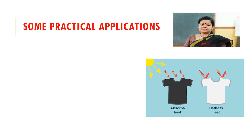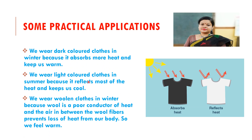Taking this knowledge: we wear dark colored clothes in winter because they absorb more heat and keep us warm. We wear light colored clothes in summer because they reflect most heat and absorb less, keeping us cool. We wear woolen clothes in winter because wool is a poor conductor of heat, and the air spaces between wool fibers prevent loss of heat from our body — since air is a bad conductor of heat, we feel warm.